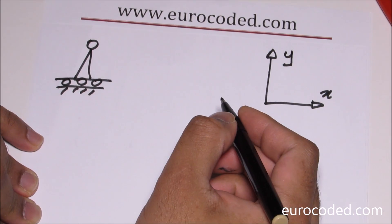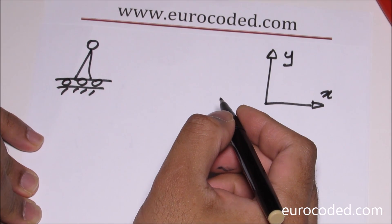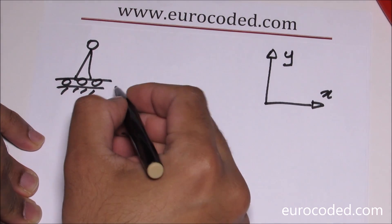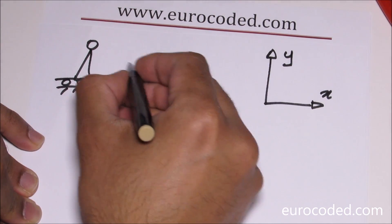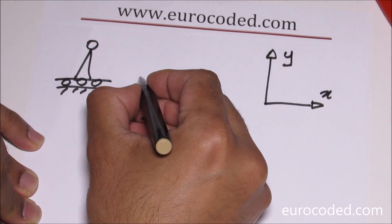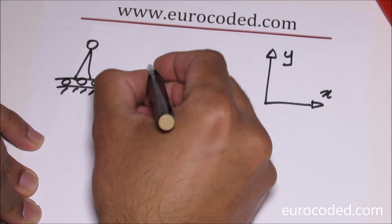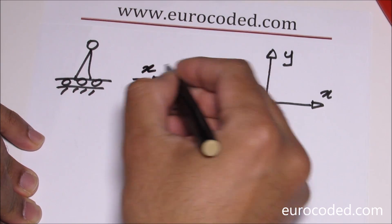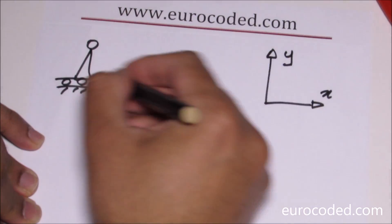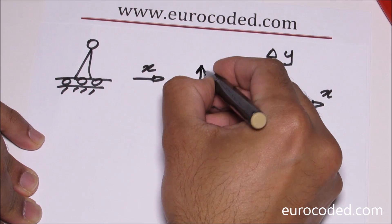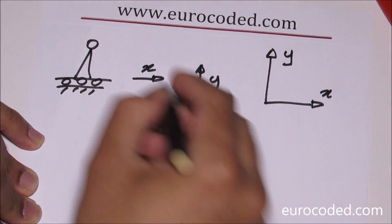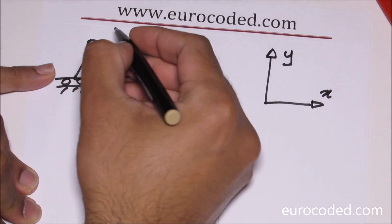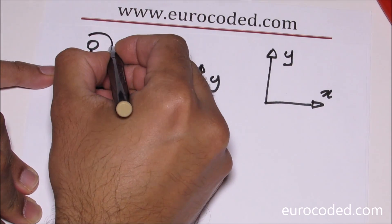The first type of support is a horizontal roller. As you can see, there are rollers here, so it allows movement in the x direction but it does not allow movement in the y direction. It does allow rotation.